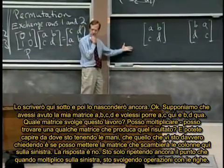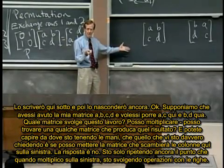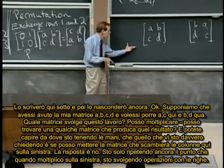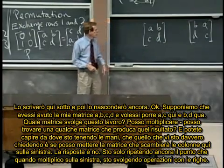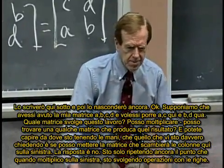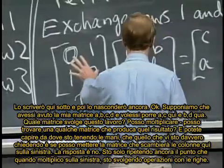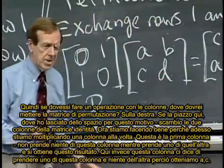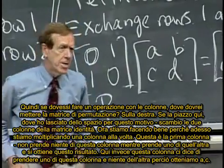And you can see from where I put my hand, I was really asking, can I put a matrix here on the left that will exchange columns? And the answer is no. So I'm just bringing out again this point that when I multiply on the left, I'm doing row operations. So if I want to do a column operation, where do I put that permutation matrix?